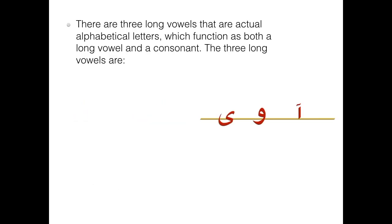There are three long vowels that are actual alphabetical letters, which function as both a long vowel and a consonant. The three long vowels are A, O, U, and E.